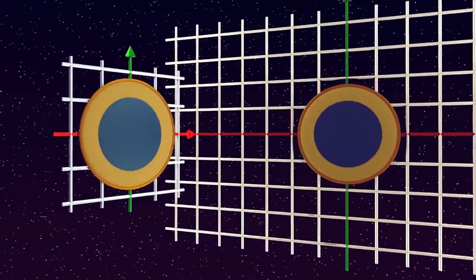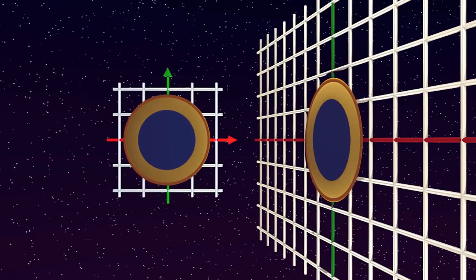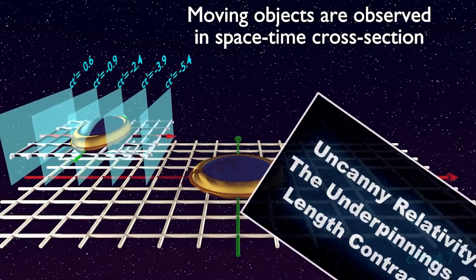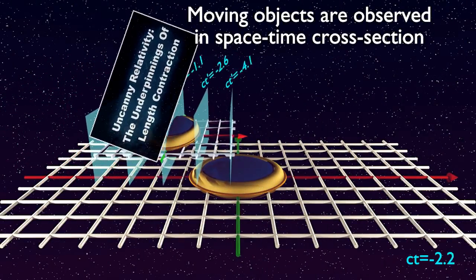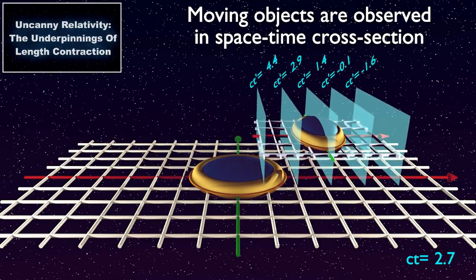The answer is positive, provided the third dimension is replaced by proper time in speed of light units. As discussed before, moving objects are observed in veritable space-time cross-sections across a finite length of their proper time.